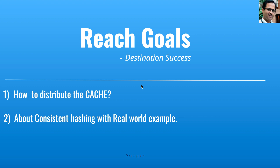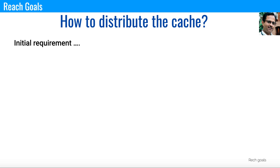Hello everyone, welcome to Reach Goals. Today I am going to talk about how to distribute the cache and about consistent hashing with a real world example. We have an initial requirement where we have a file of very large size which has 1 billion lines. In that file we have content like key and value — the key is an integer and the value is an IP address. Our requirement is to take this file and distribute it across multiple caches so that we can read it very easily.